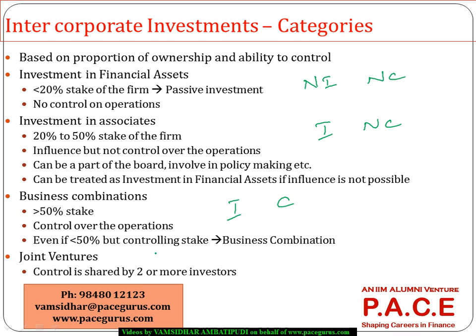The other dimension to this classification is control. No influence and no control — that is investment in financial assets. Influence but no control is investment in associates. Influence and control is investment in business combination. When it comes to joint ventures, control is not with one party — it is shared between two or more parties. Control with one significant party goes as a business combination, and no control with no influence is purely a passive investment in financial assets.